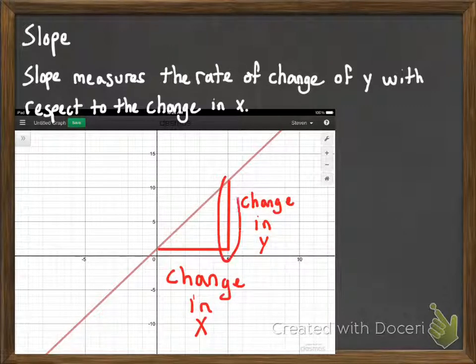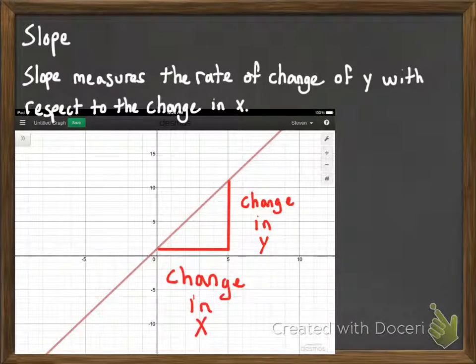And the vertical change in y here, which in this case would be from 1 up to 11, would be a change of 10. So we do the fraction 10 divided by 5, and we get that this thing actually has a slope of 2.